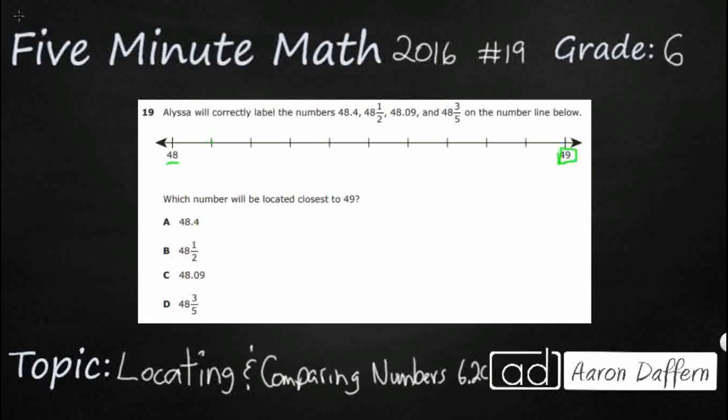So, let's just count. Let's see. 1, 2, 3, 4, 5, 6, 7, 8, 9. All right. So, 9 lines means 10 divisions and that means we're dealing with decimals.